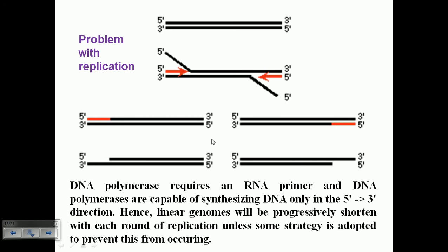This creates a significant problem. Just like what happens with eukaryotic chromosomes, the end part is progressively lost with each replication cycle. This is very problematic because genetic information is being lost — genes are disappearing — and the virus cannot tolerate that.